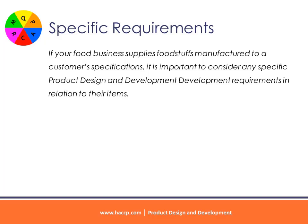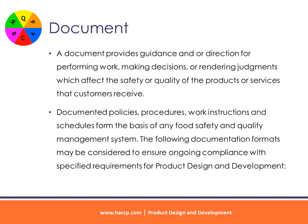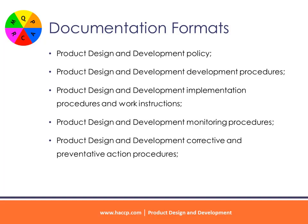If your food business supplies foodstuffs manufactured to a customer's specifications, it is important to consider any specific product design and development requirements in relation to their items. A document provides guidance and direction for performing work, making decisions, or rendering judgments which affect the safety or quality of the products or services that customers receive. Documented policies, procedures, work instructions and schedules form the basis of any food safety and quality management system. Documentation formats to consider include: product design and development policy, product design and development requirements procedures, implementation procedures and work instructions, and monitoring procedures.